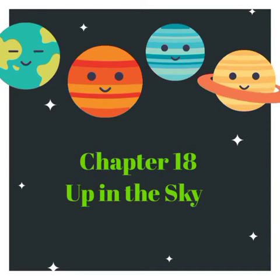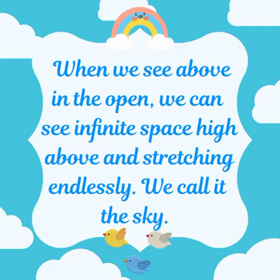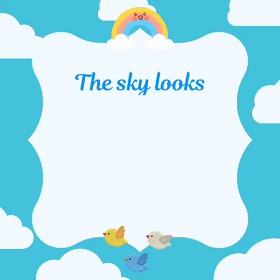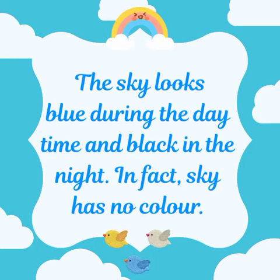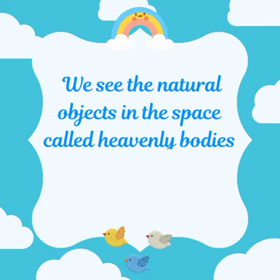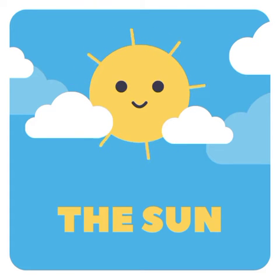Let's study Chapter 18: Up in the Sky. When we look up in the open, we can see infinite space high above, stretching endlessly — we call it the sky. The sky looks blue during the daytime and black in the night. In fact, the sky has no color. We see natural objects in space called heavenly bodies, such as the sun, the moon, and the stars.